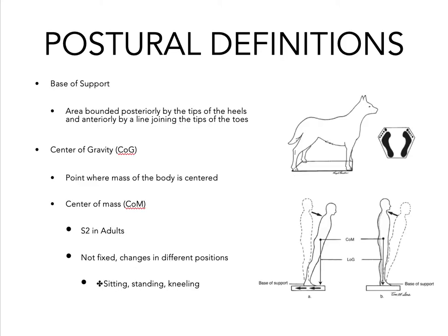Let's take a look at some postural definitions. Base of support is something you will be hearing often in this course. Base of support is an area bounded posteriorly by the tips of the heels and anteriorly by a line joining the tips of the toes. If we compare a human to a quadruped, we can see that the base of support of a human is much smaller. The larger the base of support, the more stability there is within the body.